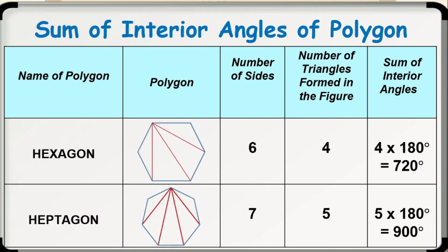Then, we have a six-sided polygon, which is a hexagon. On the figure shown, four triangles were made. Thus, to get the sum of the interior angles, we multiply 4 with 180 degrees. Therefore, the sum of the interior angles of a hexagon is 720 degrees.